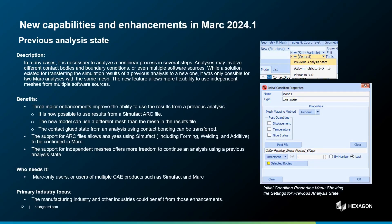The next enhancement I would like to discuss is about previous analysis state. The legacy pre-state option was designed to read data from a MARC results file and use that as the initial conditions for a new MARC analysis. This capability has been enhanced in this release. Three major improvements have been done: it is now possible to use results from a Simufact arc file — Simufact Forming or Simufact Welding. The new model can use a different mesh than the mesh in the previous analysis. And the contact glued state from an analysis using contact bonding can be transferred.